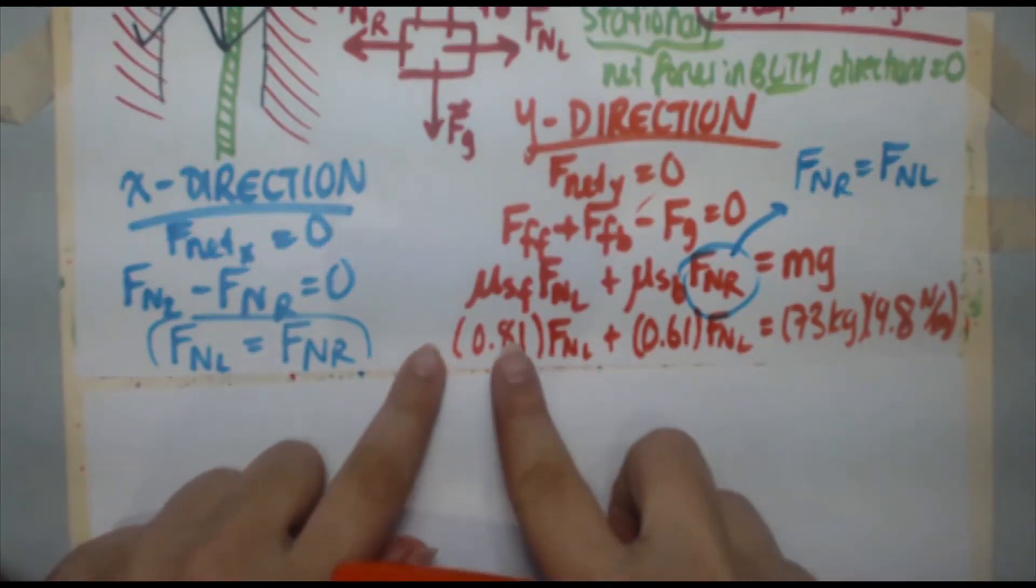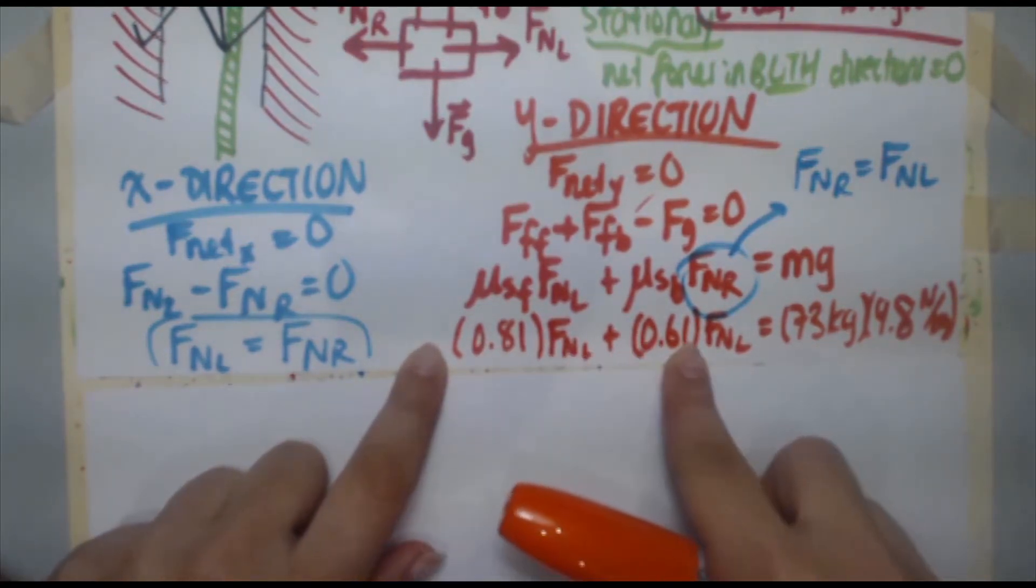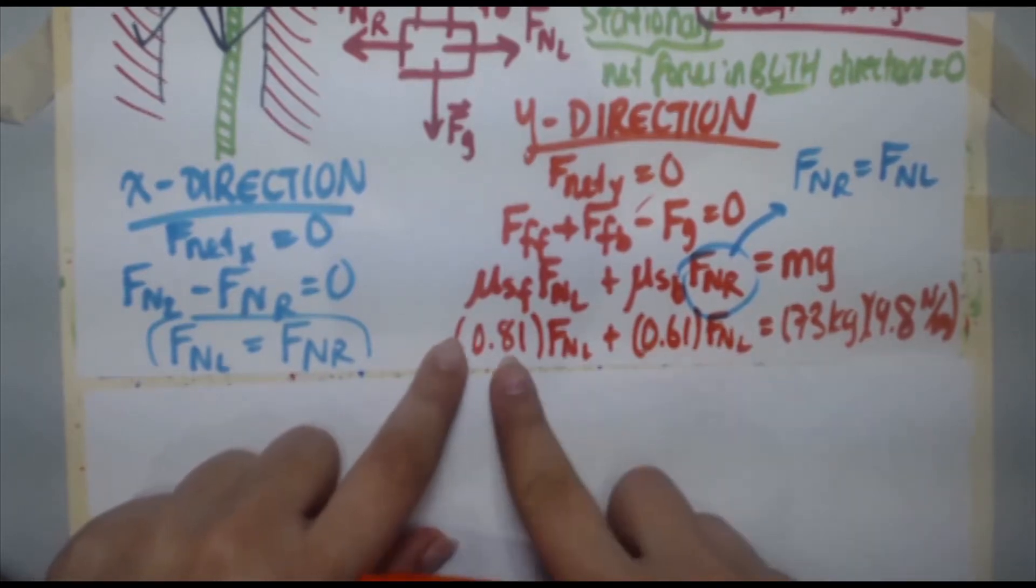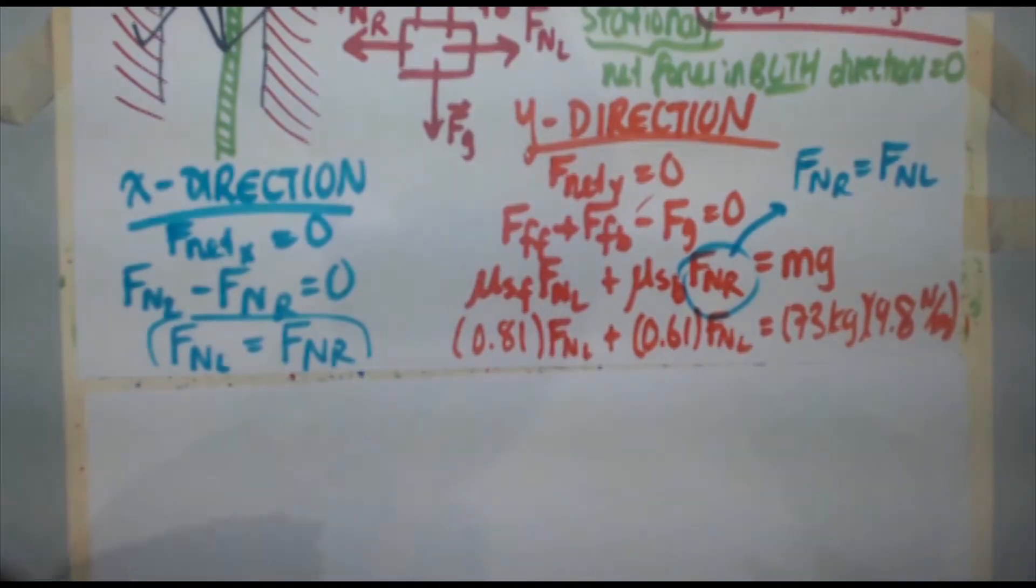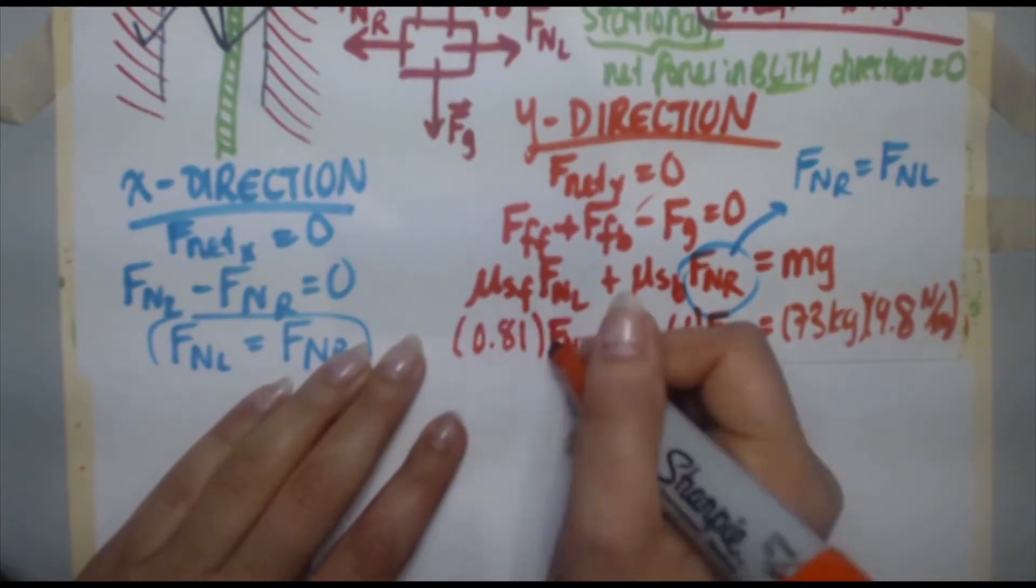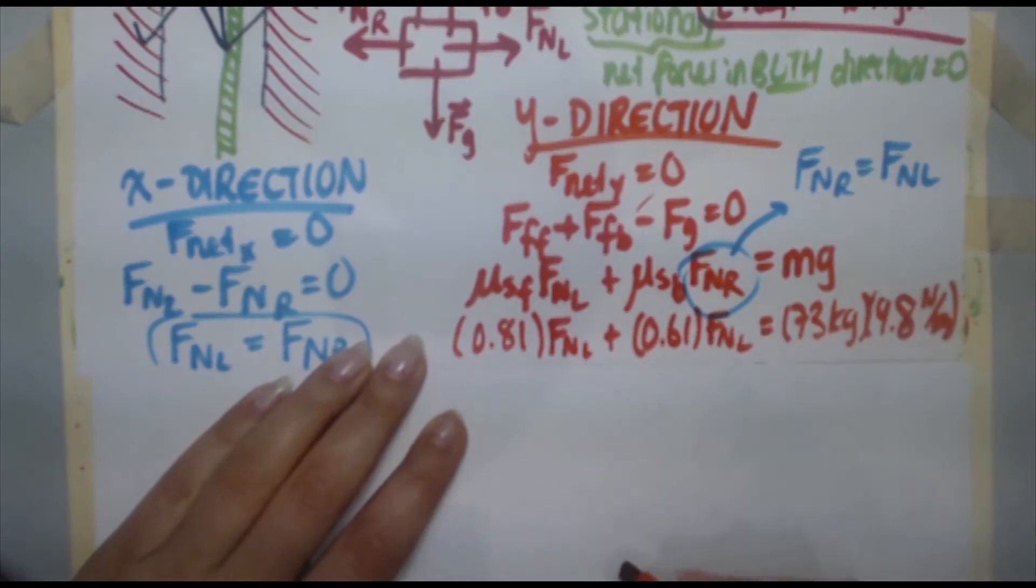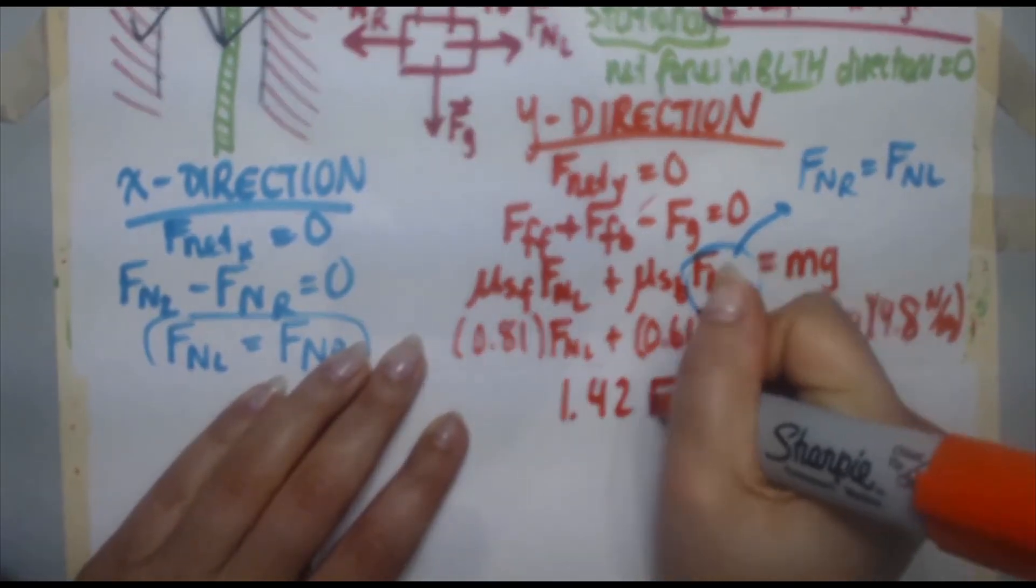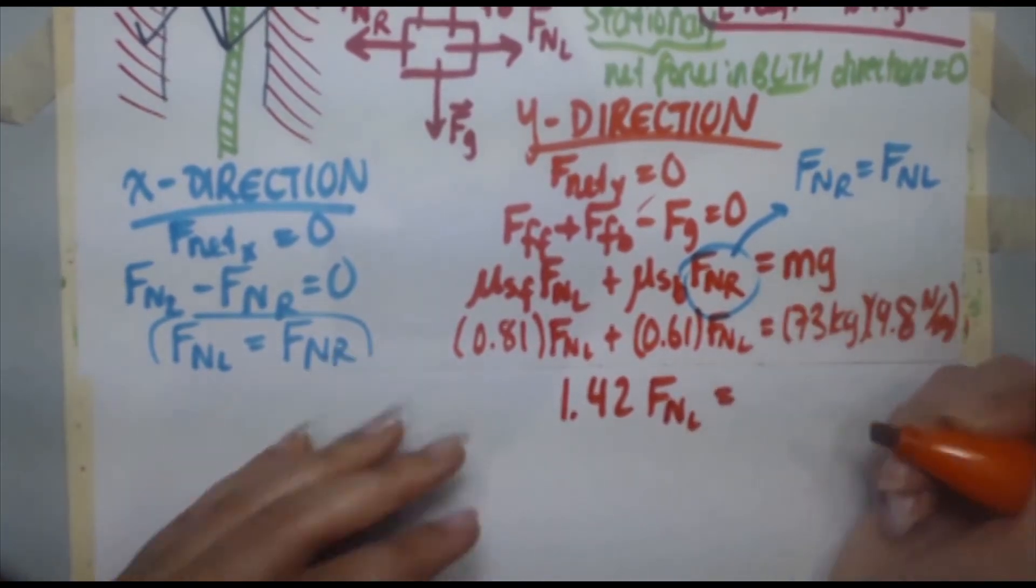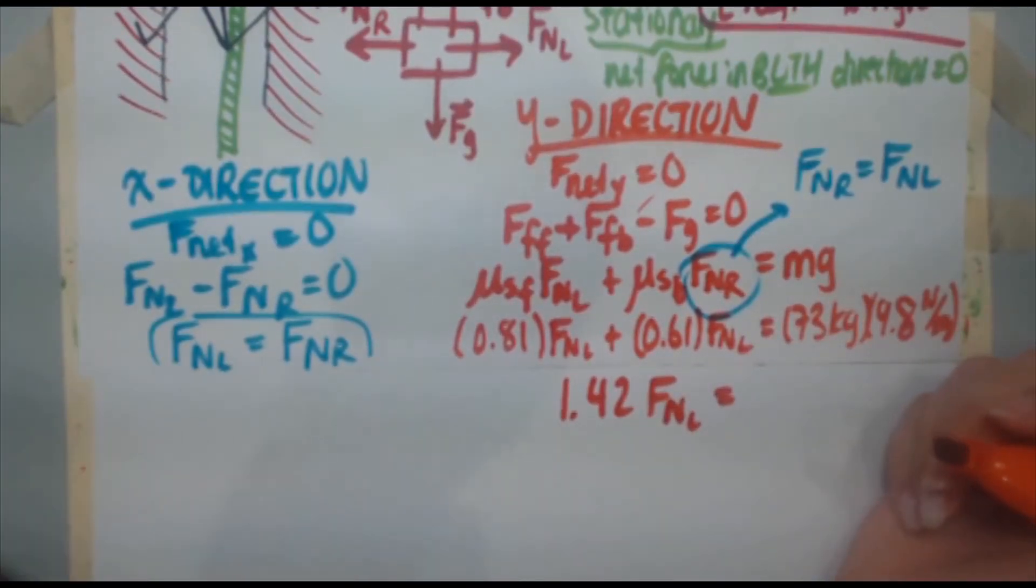Now, if you had 0.81x plus the 0.61x, you would just get whatever they are added together. You would get 1.42x, but instead of x, we just have FNL. So when you take 0.81 of an FNL and add 0.61 FNL, you get 1.42 FNL. It's just like apples. One apple plus three apples is four apples. And 73 times 9.8, you get 715.4.